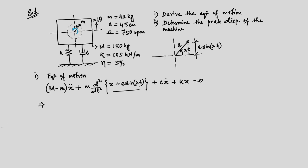If we simplify by expanding the brackets, the small m·x-double-dot terms cancel, leaving us with M·ẍ + c·ẋ + k·x on the left-hand side. Differentiating the second term in the bracket twice and moving it to the right-hand side gives m·e·λ²·sin(λt). That is the equation of motion.